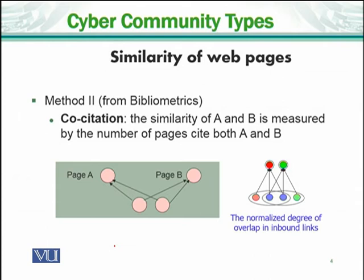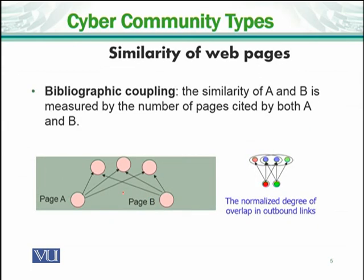Method 2 is Co-citations. The similarity of A and B is measured by the number of pages that are cited by both A and B. A and B are not directly linked to each other, but you look at which pages they both link to. You can also normalize by the in-degrees of the pages linked.